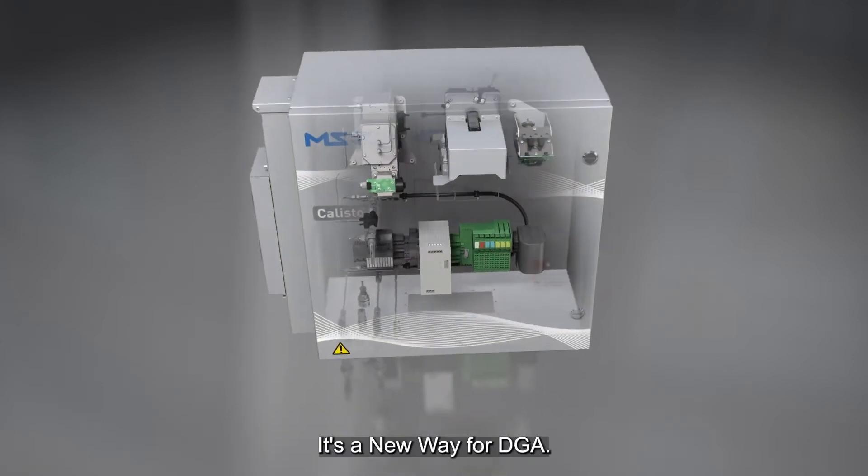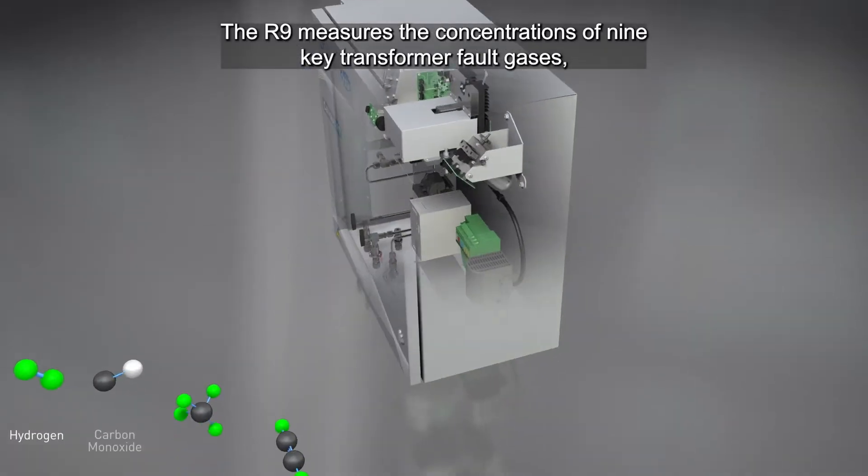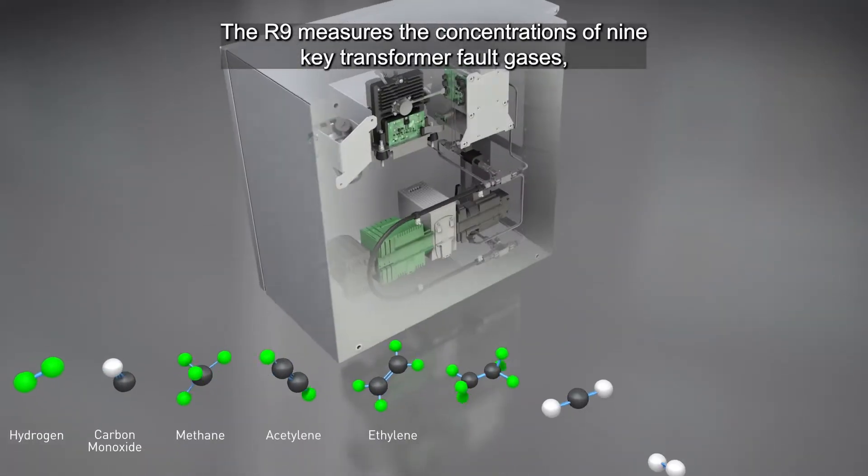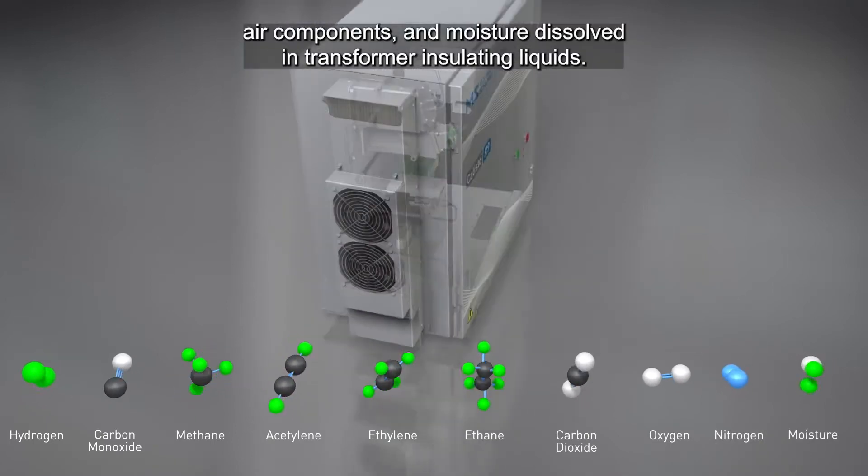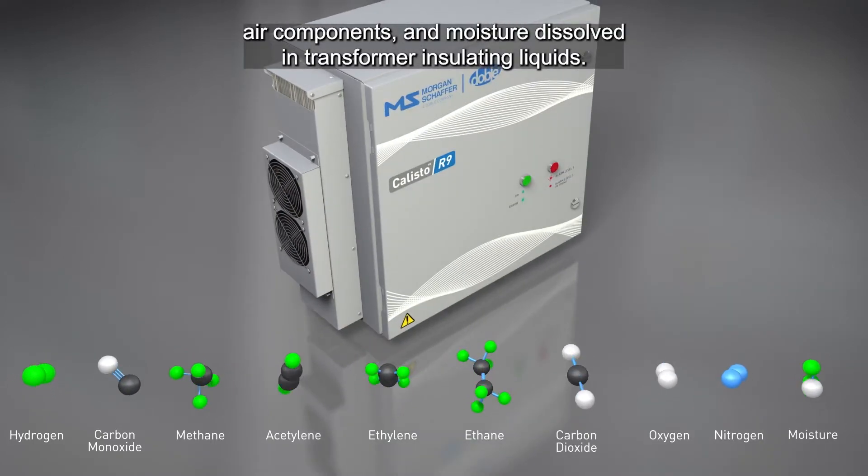It's a new way for DGA. The R9 measures the concentrations of nine key transformer fault gases, air components, and moisture dissolved in transformer insulating liquids.